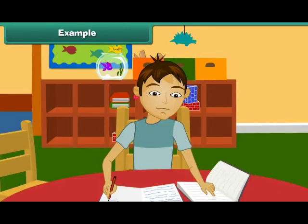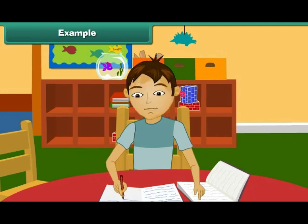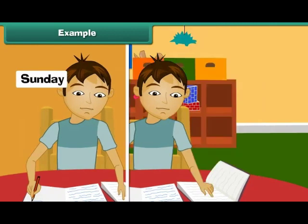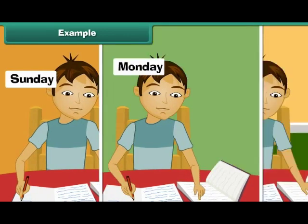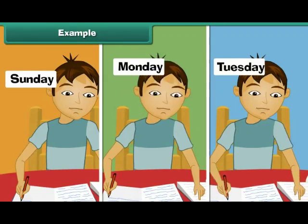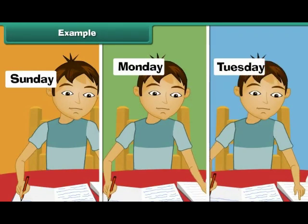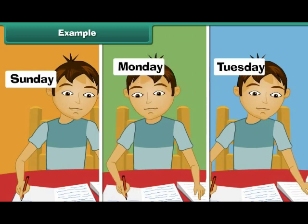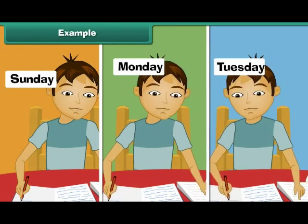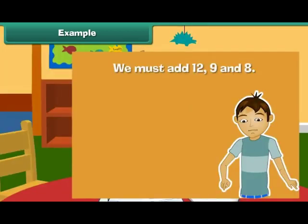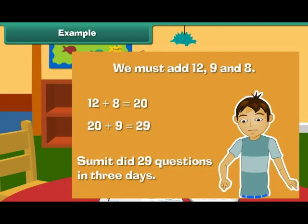Example: Sumit did 12 questions of mental addition on Sunday, 9 on Monday, and 8 on Tuesday. What is the total number of questions done by Sumit in three days? To find this, we must add 12, 9, and 8. 12 + 8 = 20. 20 + 9 = 29. Sumit did 29 questions in three days.